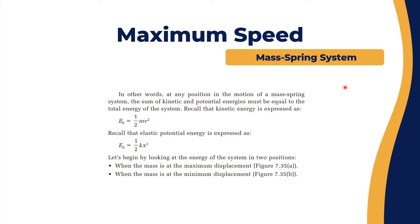How to find the maximum speed in a spring-mass system. We know that kinetic energy can be expressed as EK equals one-half mass times velocity squared, and we know that the elastic potential energy can be expressed as EP equals one-half k times x squared.